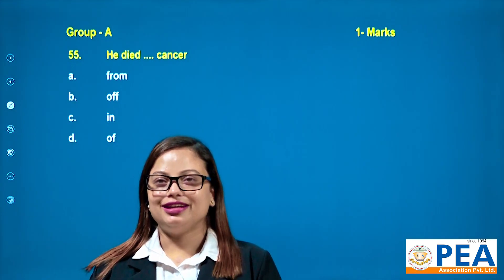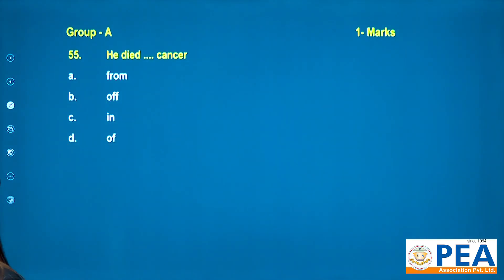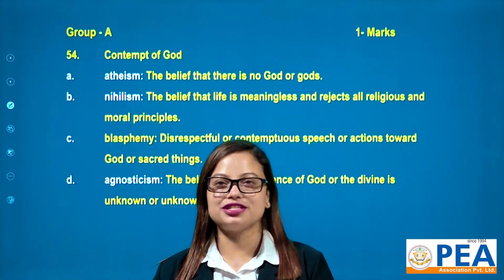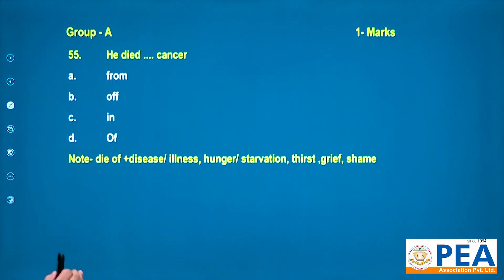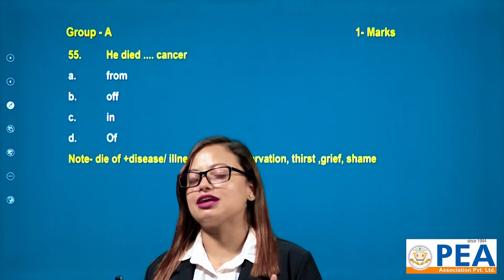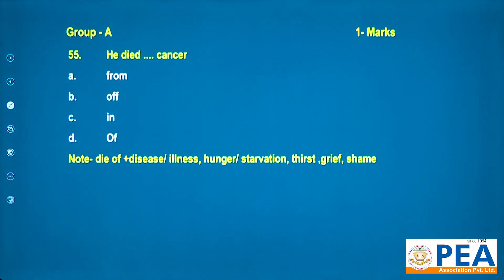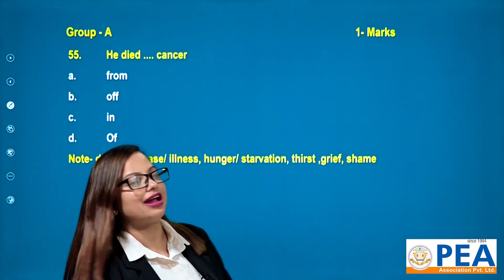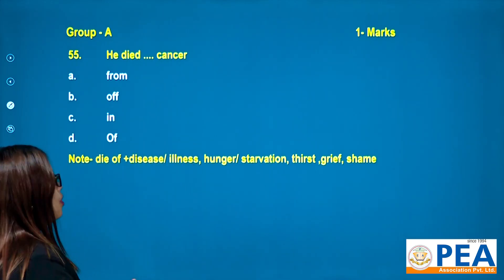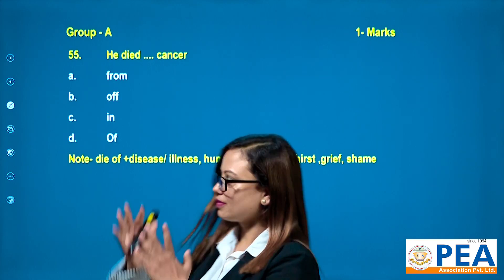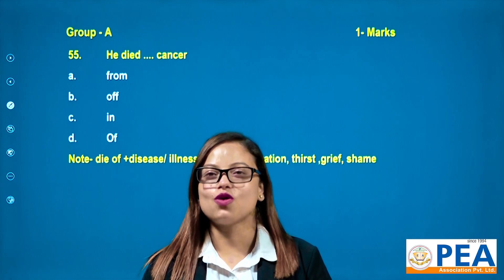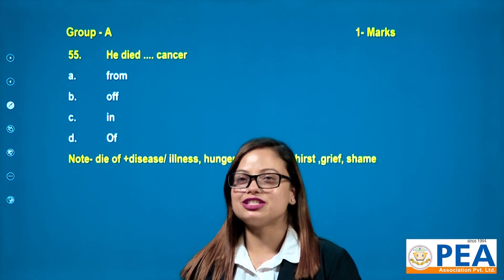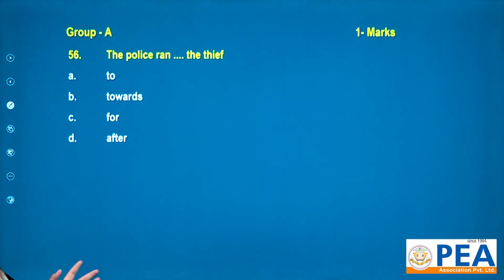Question number 55: 'He died ___ cancer.' Options are from, of, in, off. The correct answer is 'of' — he died of cancer. You use 'die of' for disease or illness, hunger, starvation, thirst, or grief. Cancer is the cause of death, so for disease or illness, you use 'die of'.